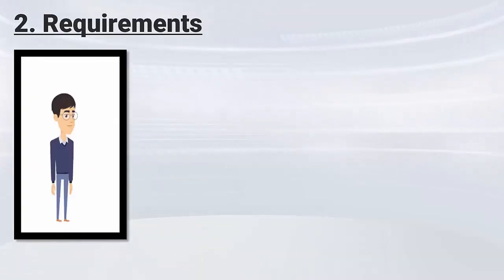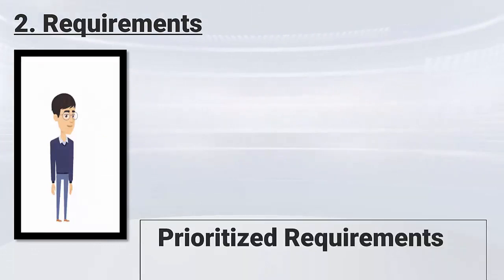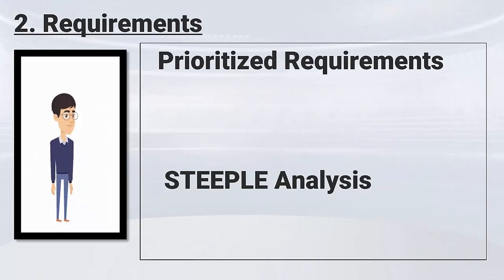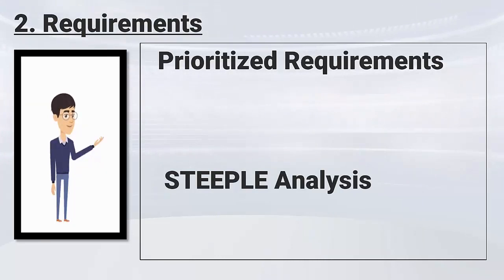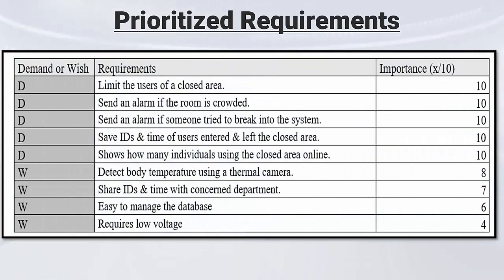The second main point in the video is the requirement. Requirements are conditions and features stated by the client that must be included in the project in order to ensure its success. The team has prepared two main parts: prioritized requirements and STEEPLE analysis. The prioritized requirements are the needs of the client sorted from the most important to the least important. There are two types of requirements: demand and wishes. In this project, the need to limit users of a closed area and save IDs is considered a demand with importance 10 out of 10, while use of low voltage is a wish with importance 4 out of 10.